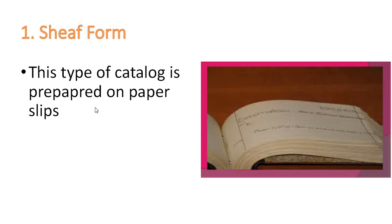Shelf form — this was used in the past and this type of catalog is prepared on paper slips. These paper slips are bound together, so this is called shelf form catalog.